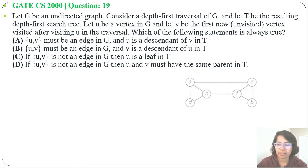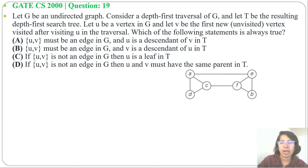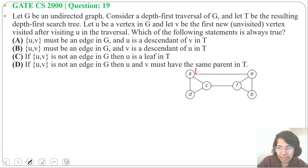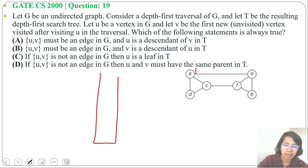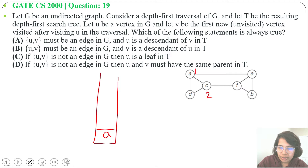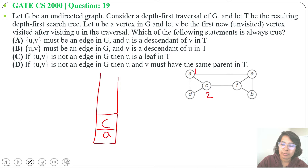Let's take an example. This is a graph; now we will do depth-first traversal on it. First we will traverse A — discover time will be 1. Let me also create a stack, so first we will push A. After A we can visit either C or E; let me visit C, so its discover time will be 2, and we push C into the stack. After C we can visit either F or D; let me visit D, so discover time will be 3.